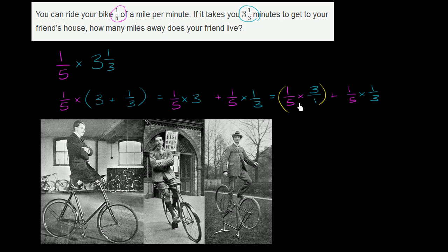Here, you multiply the numerators and you multiply the denominators. So this is going to be equal to 1 times 3 over 5 times 1. And this business right over here is going to be, and remember, order of operations, we want to do our multiplication first. So this is going to be 1 times 1 over 5 times 3. Over 5 times 3. And so that's going to be equal to 3 over 5 plus 1 over 15.